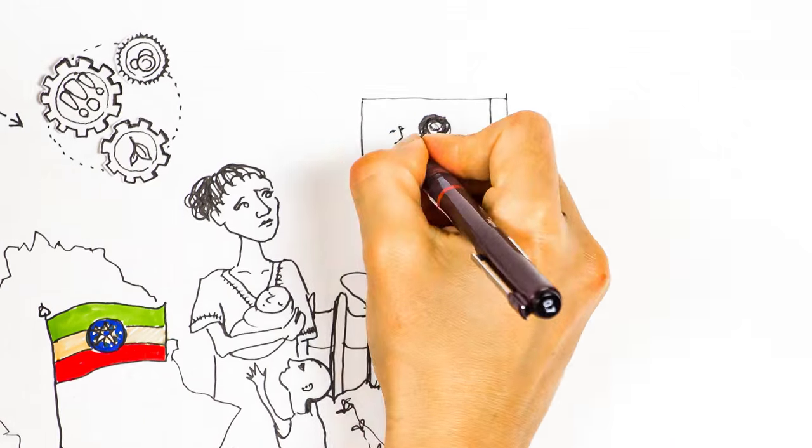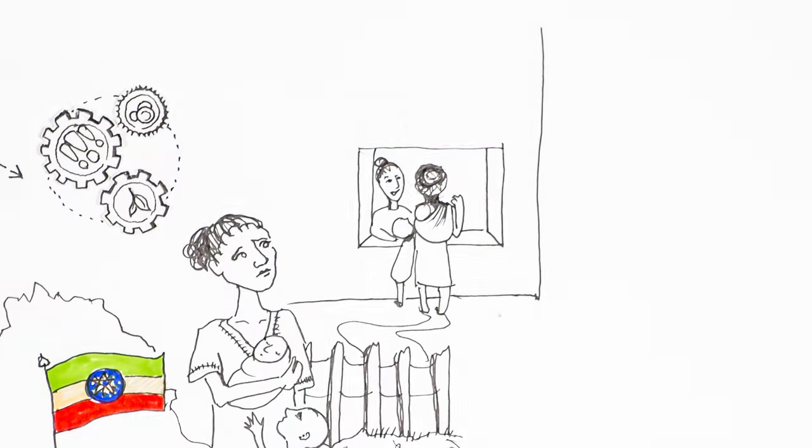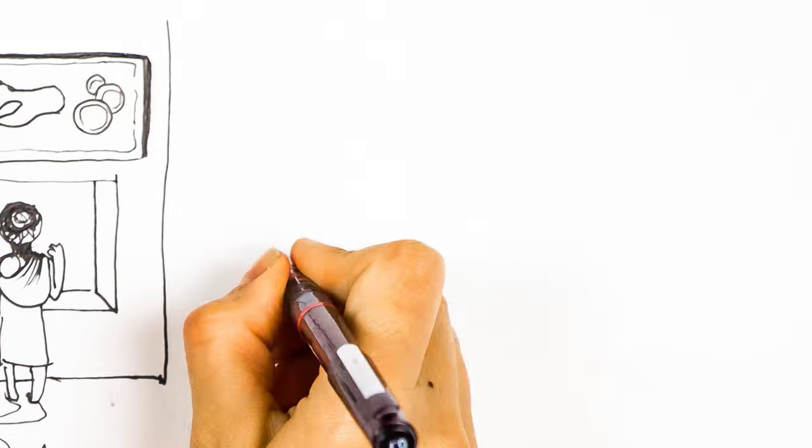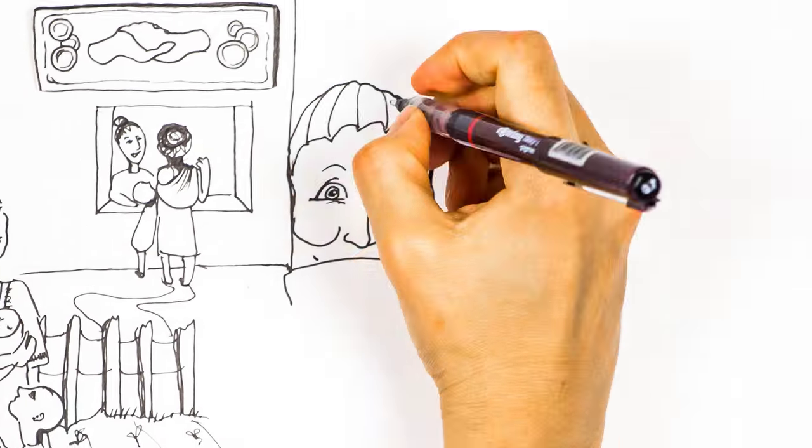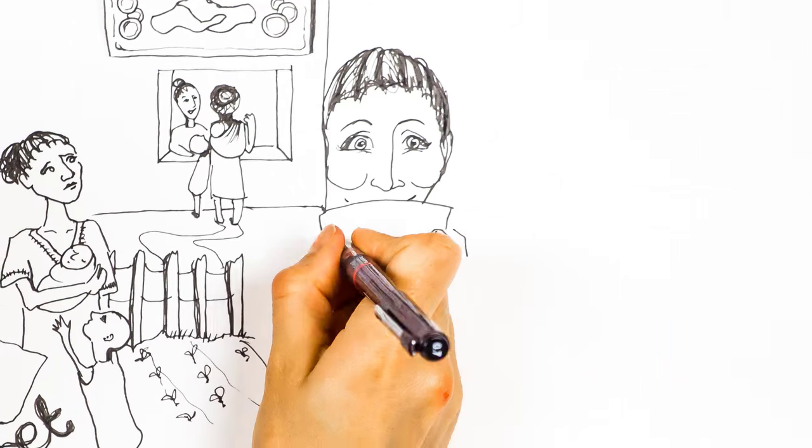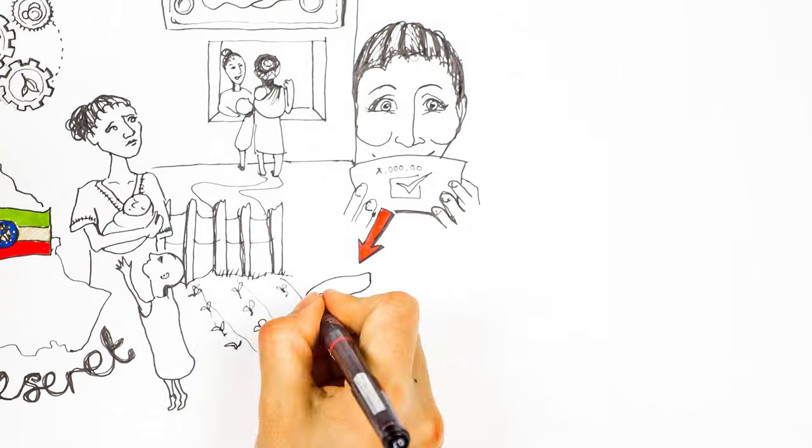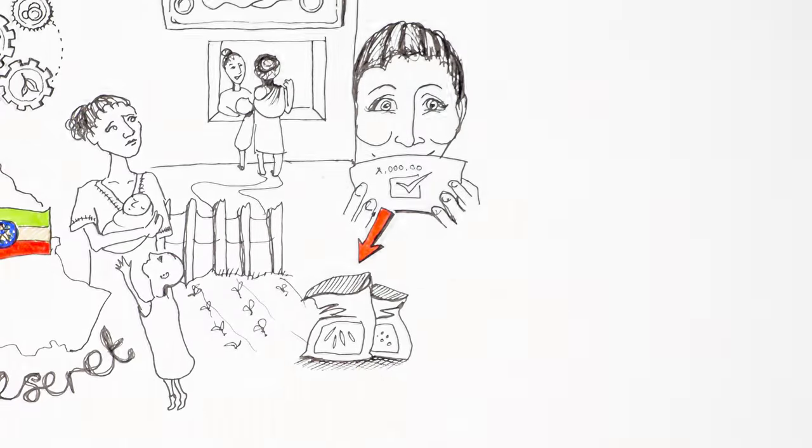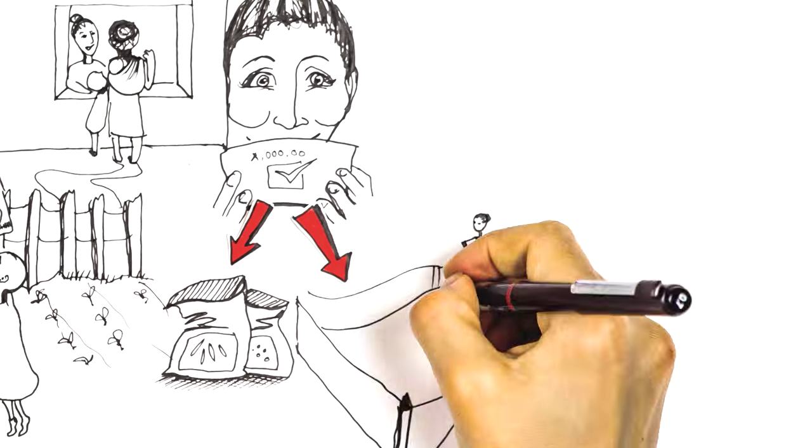Eventually, she was able to take out her first loan from a revolving fund. She rented land and bought seeds. Income from selling her produce allowed her to pay back the loan. She also saved more, meaning more local people could benefit from the co-operative.